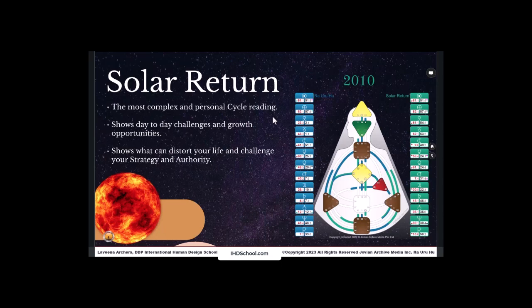It's going to show you what can distort your life and challenge your strategy, you following your own authority. So here's where we're going to encounter what we're going to be meeting and learning and experiencing. Year after year, we have a new solar imprint or return that renews that cellular imprint of purpose, the sun and earth, because it happens exactly at the moment of birth. So it's going to give us that renewal of our life's work.